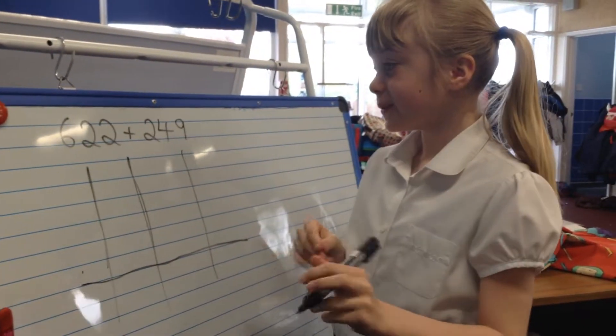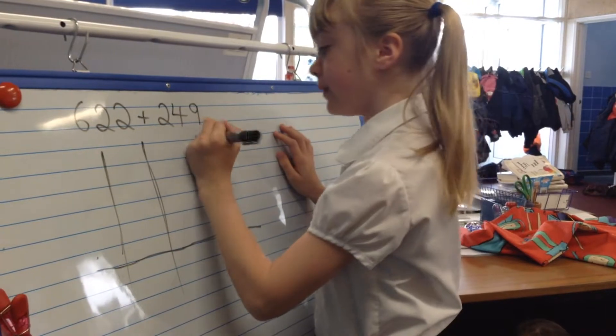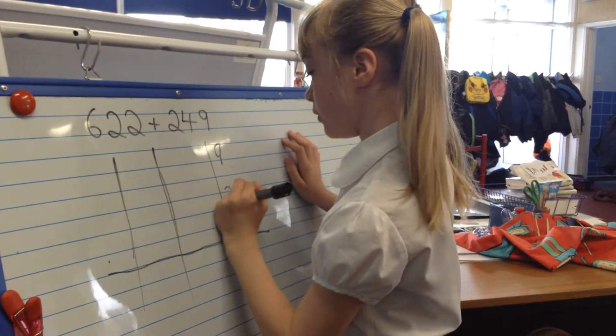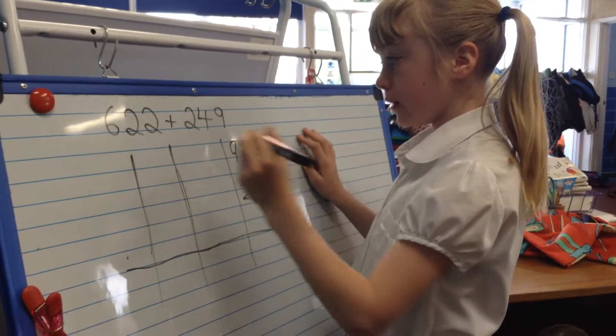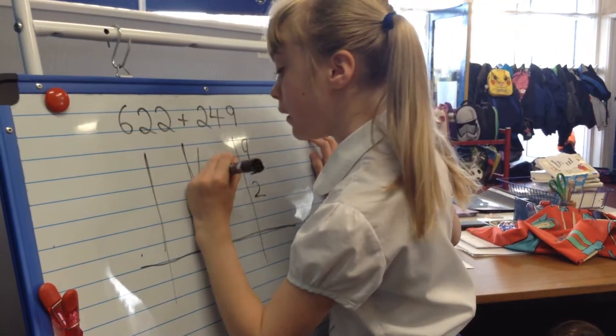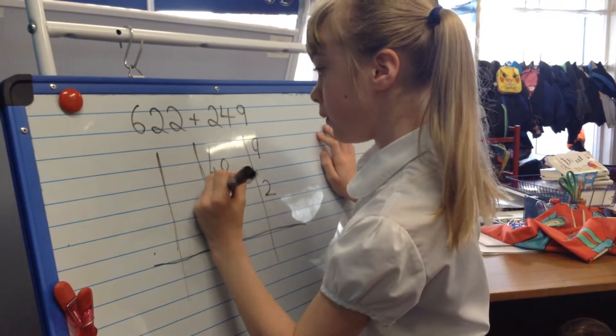So first you will write the ones, so 9 and 2, and then you would write 40 and 20.